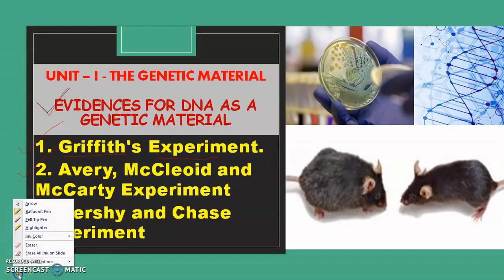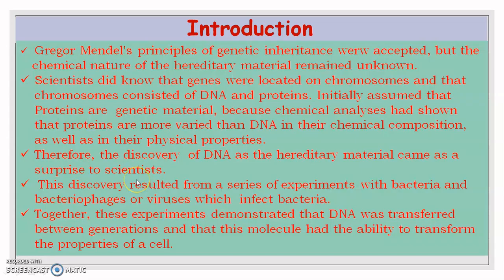Let's start with the introduction to DNA as a genetic material. Gregor John Mendel was the first scientist who studied the mechanism of genetic inheritance — how characters get transmitted from one generation to the next. However, he did not discover the chemical nature of that hereditary material, and it remained unknown for many years. At the same time, scientists knew that genes were located on chromosomes, and that chromosomes consist of DNA and proteins.